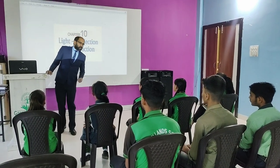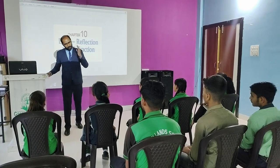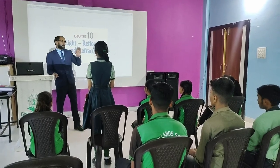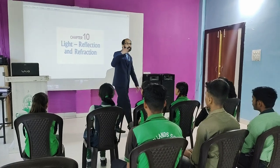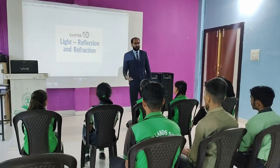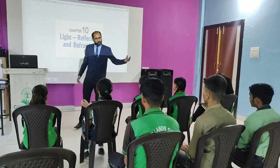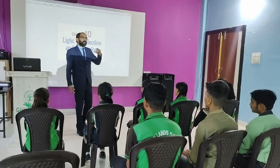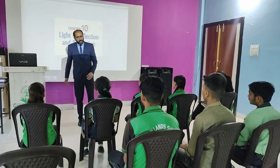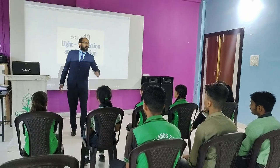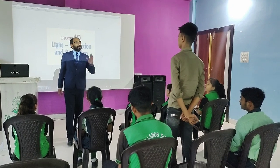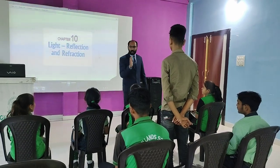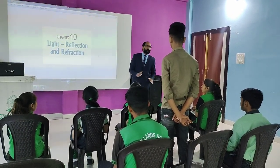First, what is meant by a luminous object? The objects which can emit their own light are called luminous objects. Non-luminous objects don't have a source of emitting light. Can you say the moon is luminous or non-luminous? The moon doesn't have its own light source, so it is known as a non-luminous object.